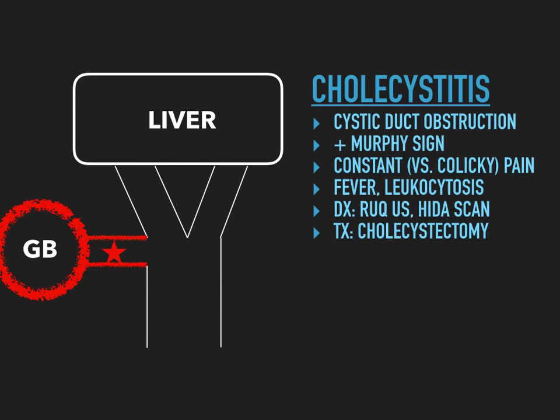On labs, they'll give you a fever and leukocytosis. If you see an elevated white count and a fever, you have cholecystitis — fever and an elevated white count are classic for inflammation, and cholecystitis is inflammation. To diagnose cholecystitis, you still want to do a right upper quadrant ultrasound, which should be your first-line guess for biliary pathology because it's so cheap and non-invasive.